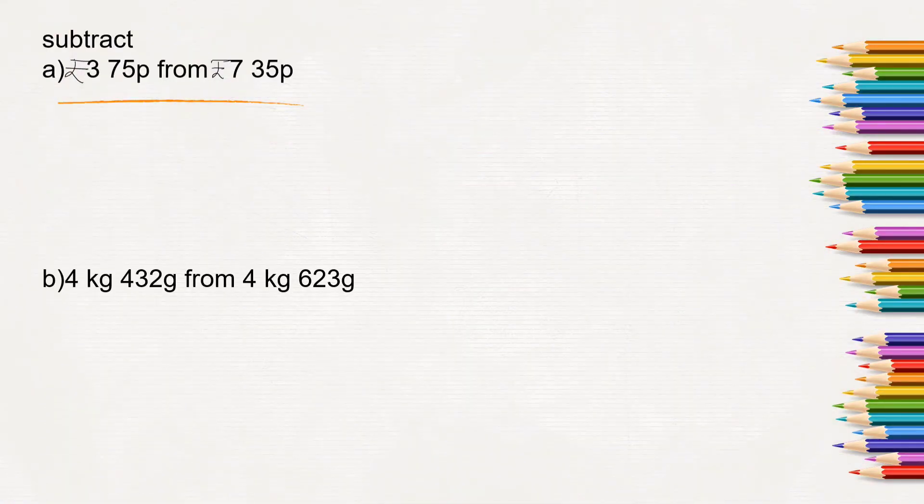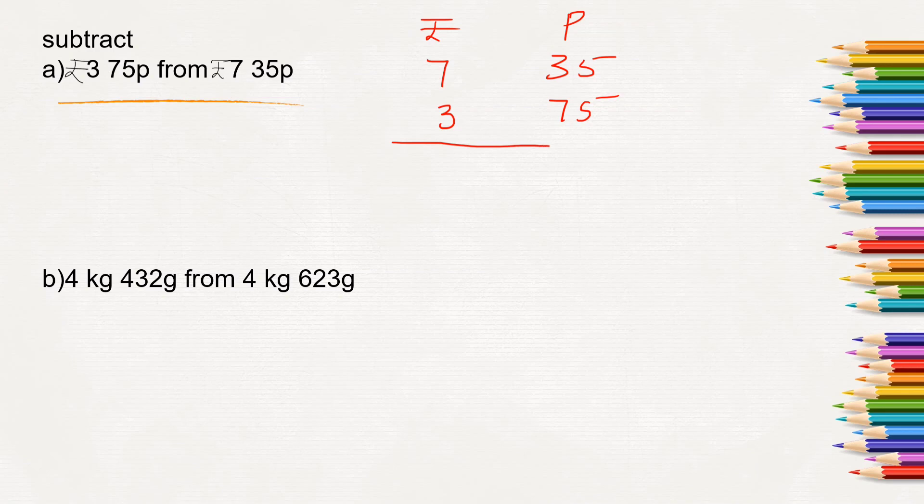Here is the next one. Here we need to subtract: subtract 3 rupees 75 paise from 7 rupees 35 paise. So here rupees column and paise column. From 7 rupees 35 paise we will have to take away 3 rupees 75 paise. So 5 minus 5 will be 0. From 3 we cannot take away 7, so we will have to borrow from 7. 7 becomes 6 and 3 becomes 13. 13 minus 7 will be 6 and 6 minus 3 will be 3. So if we take away 3 rupees 75 paise from 7 rupees 35 paise, we will be left with 3 rupees 60 paise.